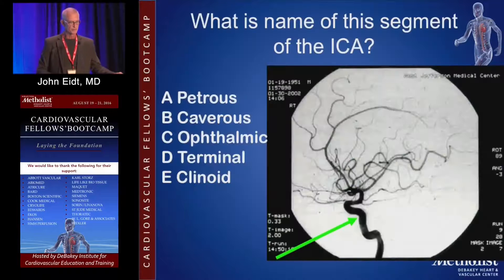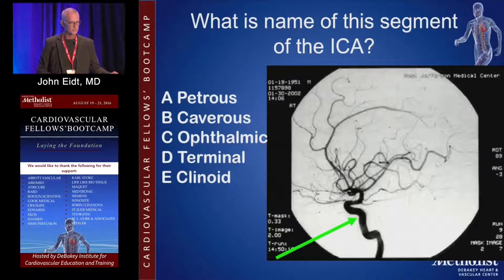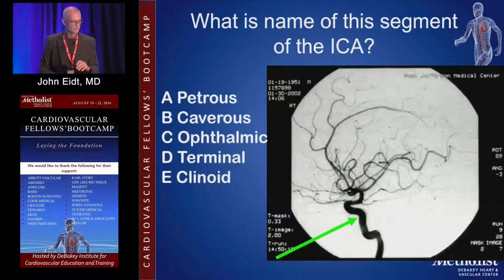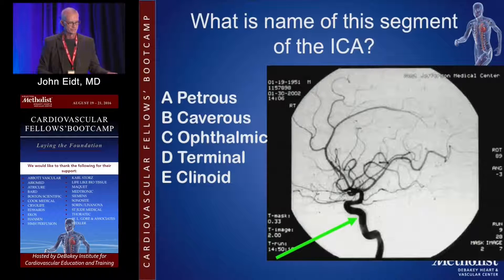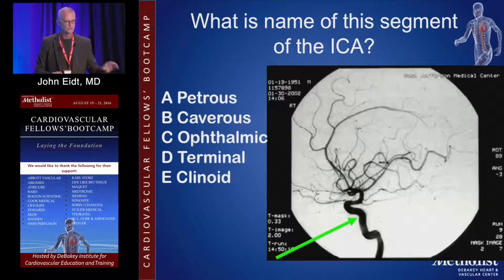You've got all three vessels showing from an anterior circulation injection. What's the name of this segment of the ICA? We said it was the siphon or cavernous — so that's the cavernous sinus.